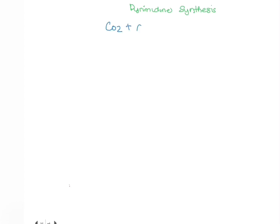Hello guys, welcome back to our channel and welcome to today's video. In the last video we looked at the synthesis of purines, and now we're going to look at the synthesis of pyrimidines. The pyrimidines are cytosine, uracil, and thymine. We're going to begin with the de novo pathway.